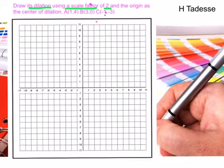The triangle has the center of dilation at point A (1,4), B (3,0), and C